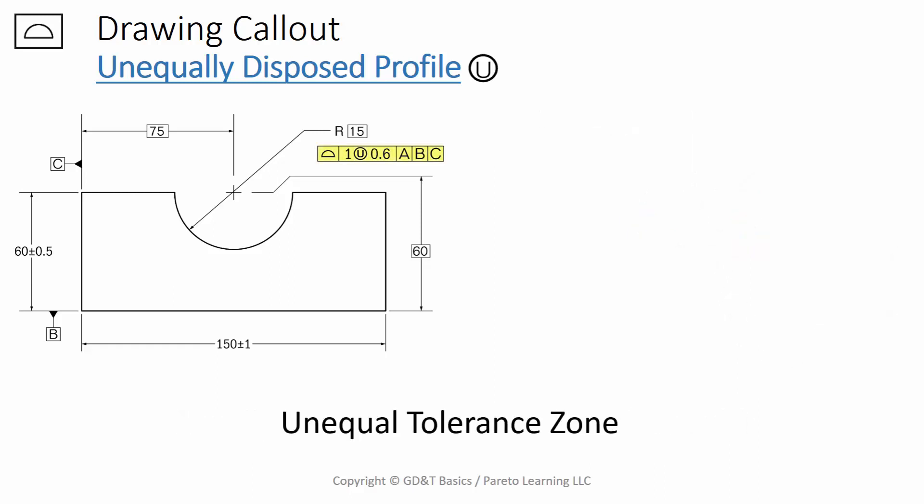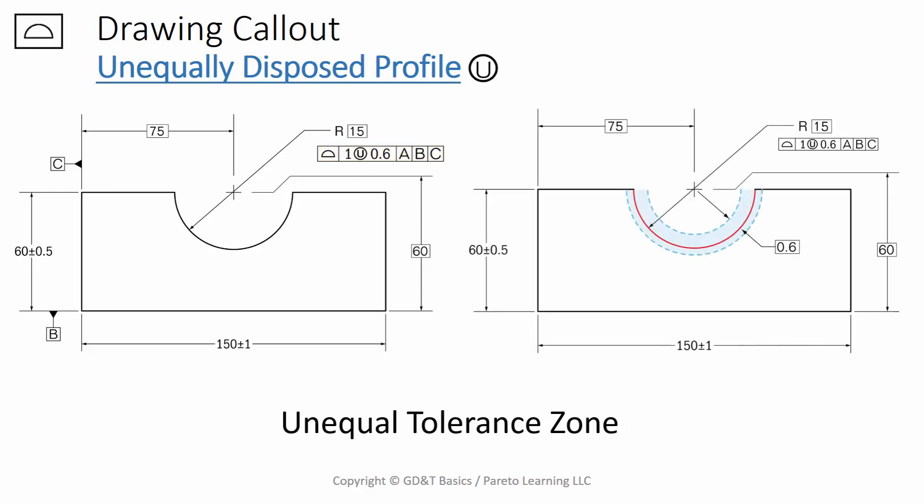We can have an unequal tolerance zone, which we just went over. This means that on one side you have a little bit more than on the other side. Remember, the number to the left of the U is the total tolerance range, and the number to the right of the U is how much material exists on the outside of the part. So in this case we have 0.6 on the outside of the part, and 0.4 inside.